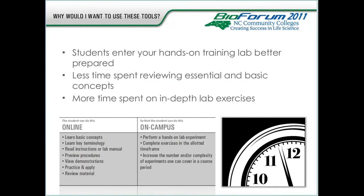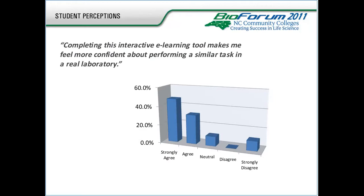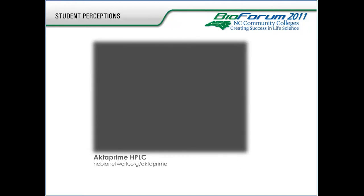So why use these tools? Our goal is to transition as much material online as possible so that we maximize our students' hands-on time in the laboratory. These are the types of activities we can easily accommodate online, and that leaves hands-on activities for on campus. The result is that students enter your hands-on training lab better prepared, and we spend less time in a face-to-face setting reviewing essential and basic concepts. We surveyed first-semester biotechnology students, and the majority cited an increase in confidence about performing a similar task in a real laboratory, which we believe will translate into improved performance in the lab.